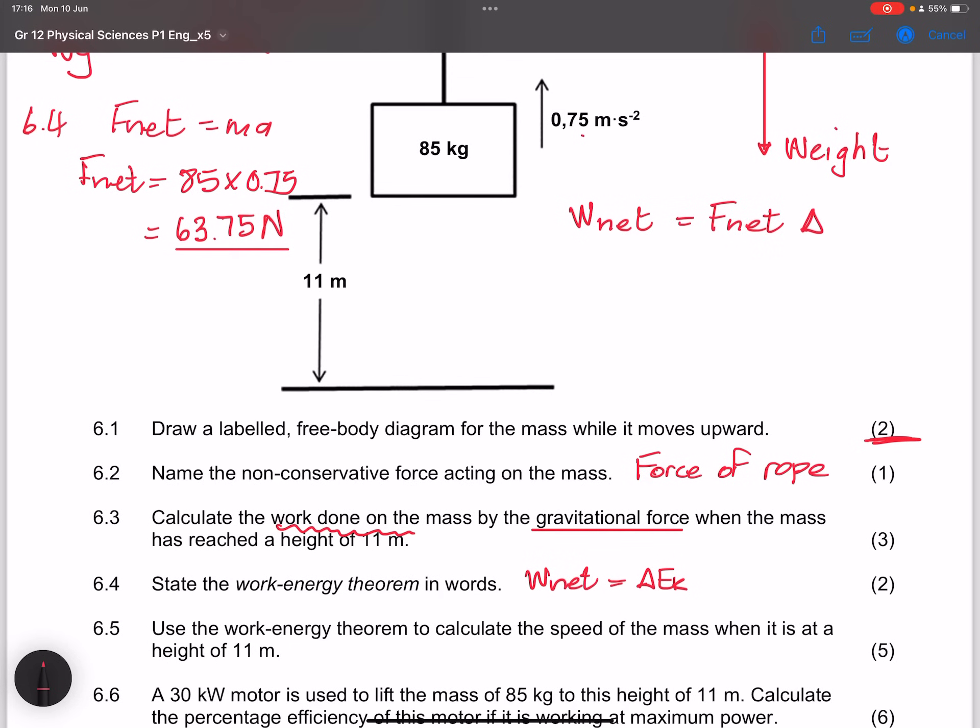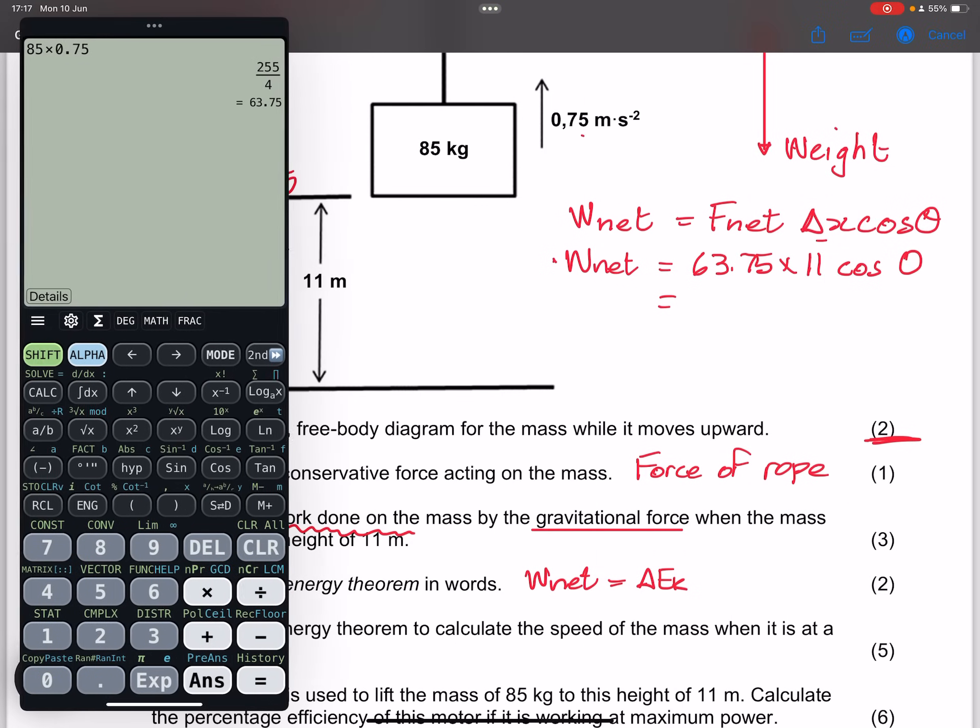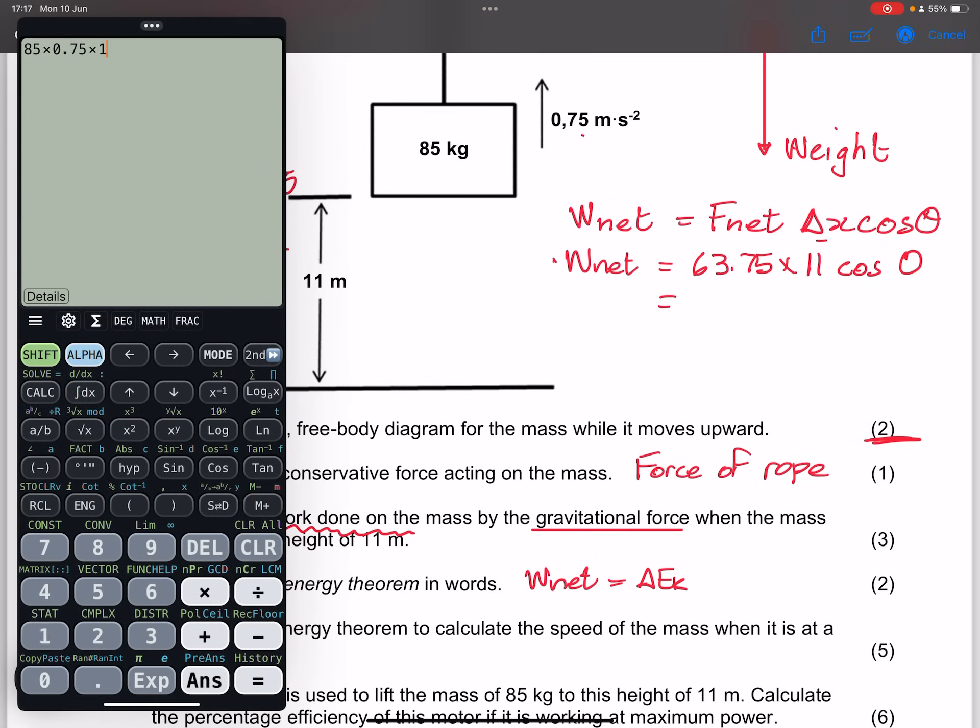So we can say that the net force is equal to... remember this is the work energy theorem, that net work done is F net delta x times the cos of the angle. Now what is our net work done? So we know that our net work done would be F net, 63.75 multiplied by the displacement, is 11. And remember that the net force is in the same direction as the motion of the object, so this would be the cos of zero. Therefore we get an amount of 63.75 times 11, so I get 701.25 joules.